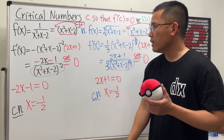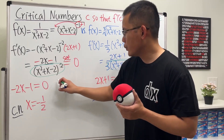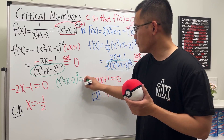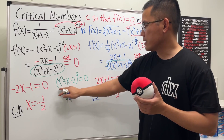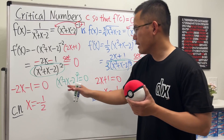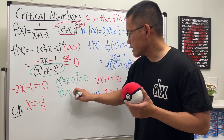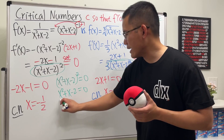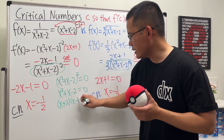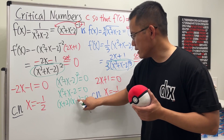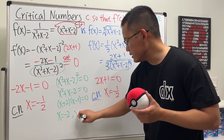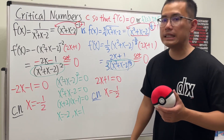For the first function, setting the denominator equal to zero: (x² + x - 2) squared = 0. Taking the square root of both sides gives x² + x - 2 = 0. Factoring: (x + 2)(x - 1) = 0, so x = negative 2 and x = 1.